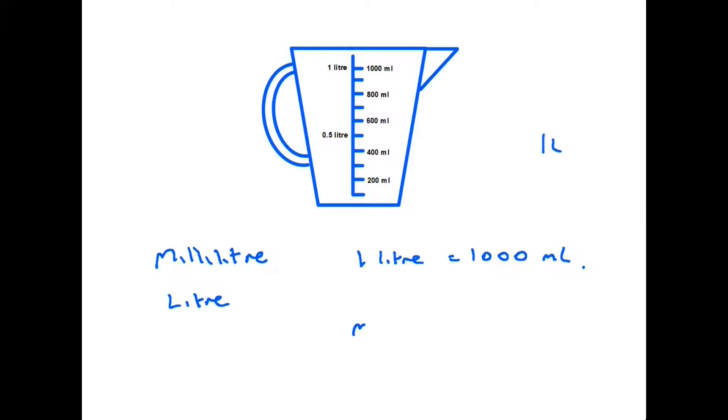What we need to be able to do then is to convert between millimeters and liters. We know that the relationship is a thousand. We just need to be careful that we are making a calculation in the right direction. So if we are converting from milliliters to liters, we need to divide by a thousand.